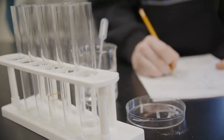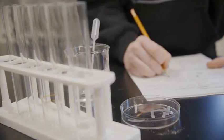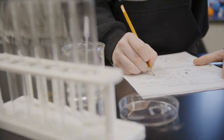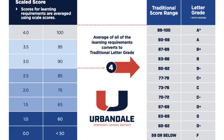The most recent score on a piece of evidence related to a learning requirement becomes that learning requirement score. At the end of the grading period, all learning requirement scores are averaged for a final letter grade. The final letter grade reflects the student's level of proficiency for all of the skills in that course.